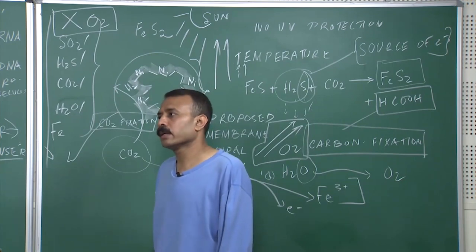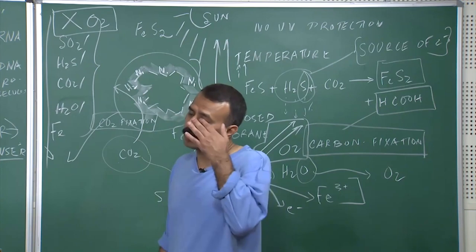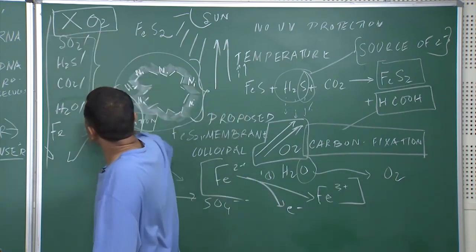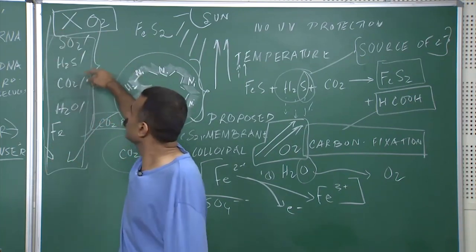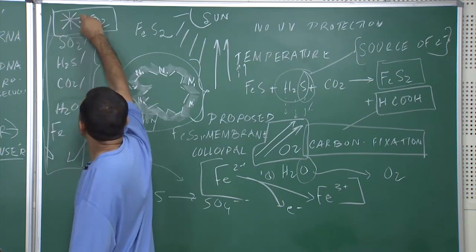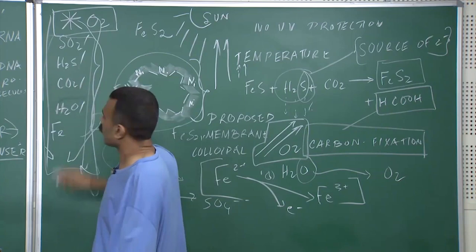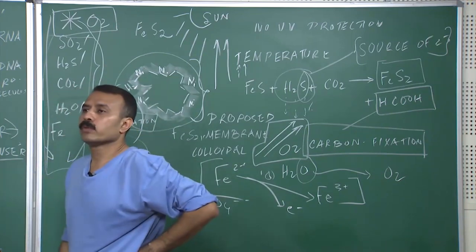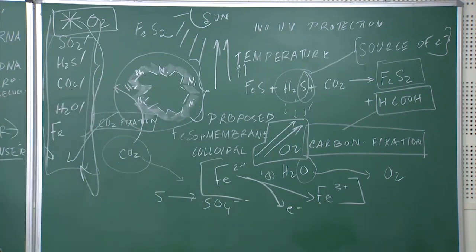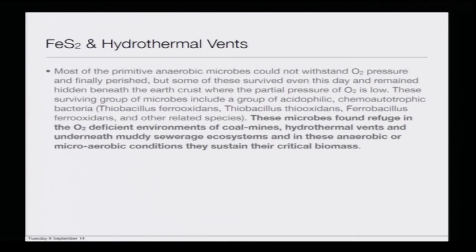All those microbes which evolved in the pre-Archean or Archean era started perishing because they were in no position to withstand the oxygen partial pressure — oxygen was totally alien to them. But with the evolution of oxygen taking center stage, all the iron and sulphurs were getting oxidized, and it was a totally new world about to evolve. Most of the primitive anaerobic microbes could not withstand oxygen pressure and perished, but some survived even to this day, remaining hidden beneath the earth's crust where the partial pressure of oxygen is low.